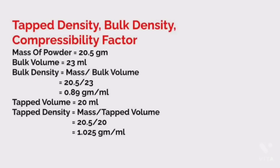Now let's do the calculation part of bulk density, tap density and compressibility factor. The mass of powder is found to be 20.5 gram and bulk volume mark is 23 ml. Therefore, bulk density equals mass upon bulk volume equals 20.5 upon 23 ml equals 0.89 gram per ml.